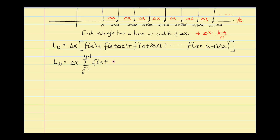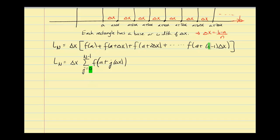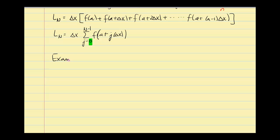The summation notation for the left endpoint approximation starts at j = 0 instead of j = 1, going up to n − 1. When j = 0, zero times delta x equals zero, so a + 0 = a, giving the first value. The formula is: L_n = delta x · summation from j=0 to n−1 of f(a + j·delta x).